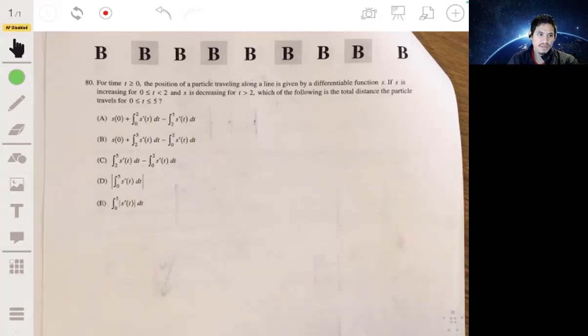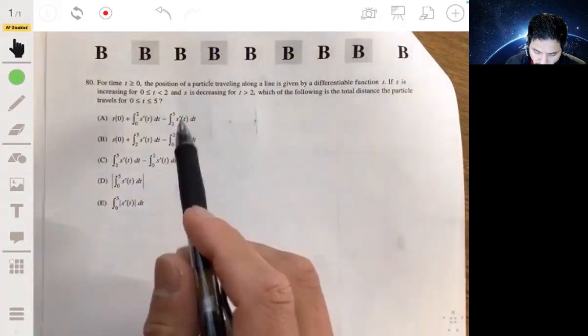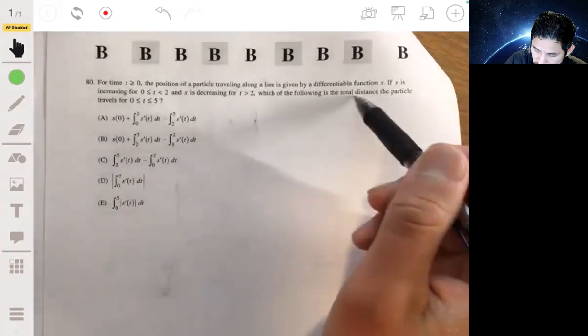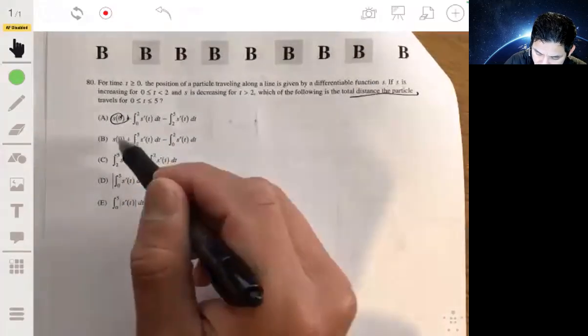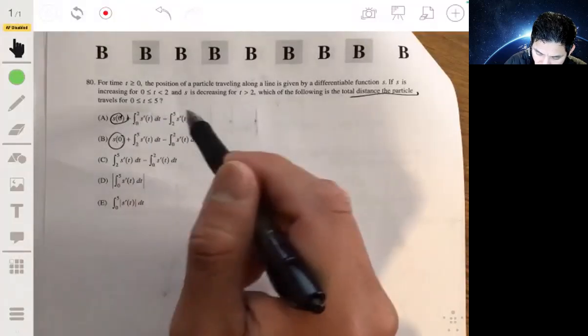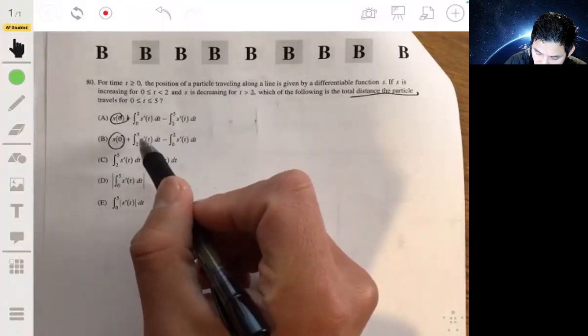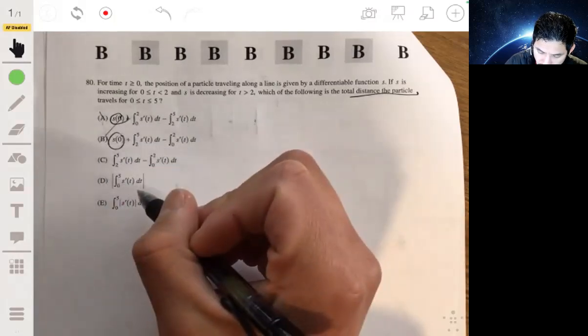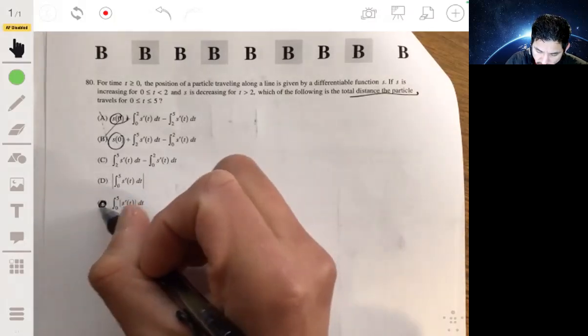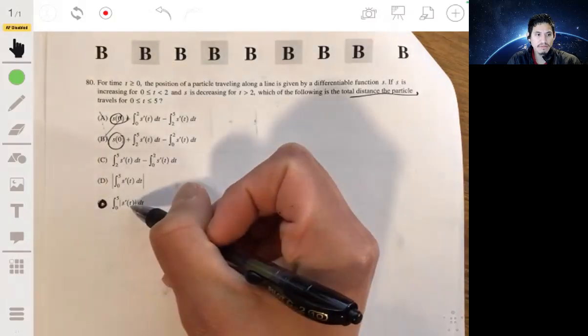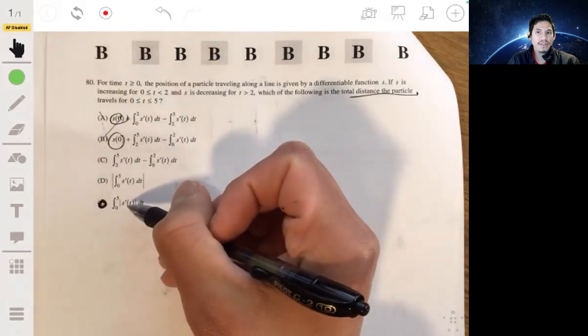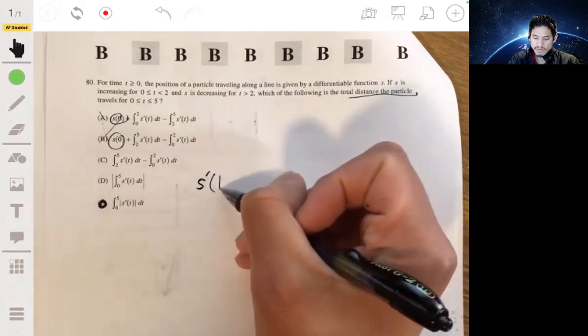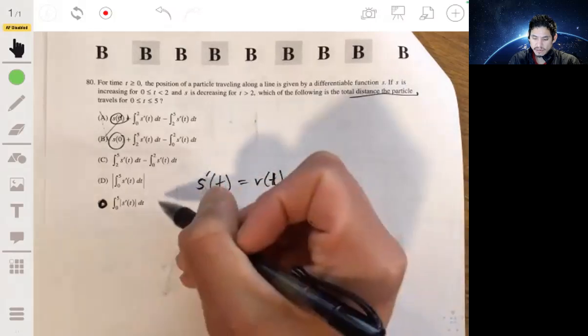We want to look for the absolute values. The first two won't count because we don't care about s of zero. We care about the integral from zero to five and we want to make sure it's always positive. It's going to be E because we want to integrate the velocity equation, and we know the derivative of position is velocity. The answer is E.